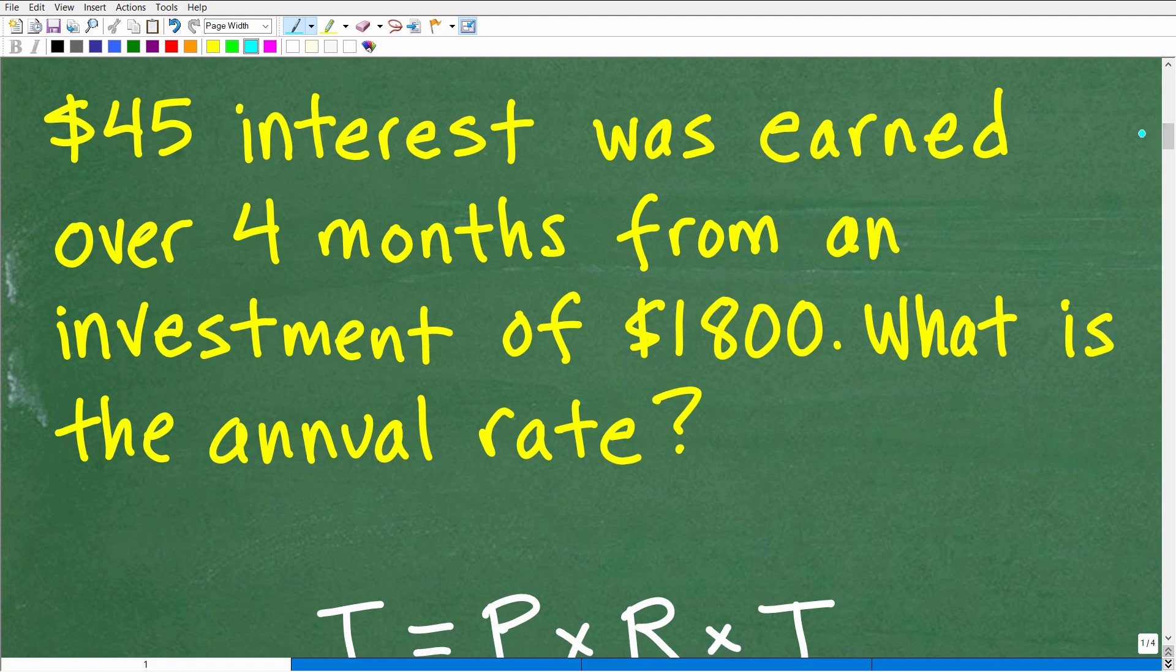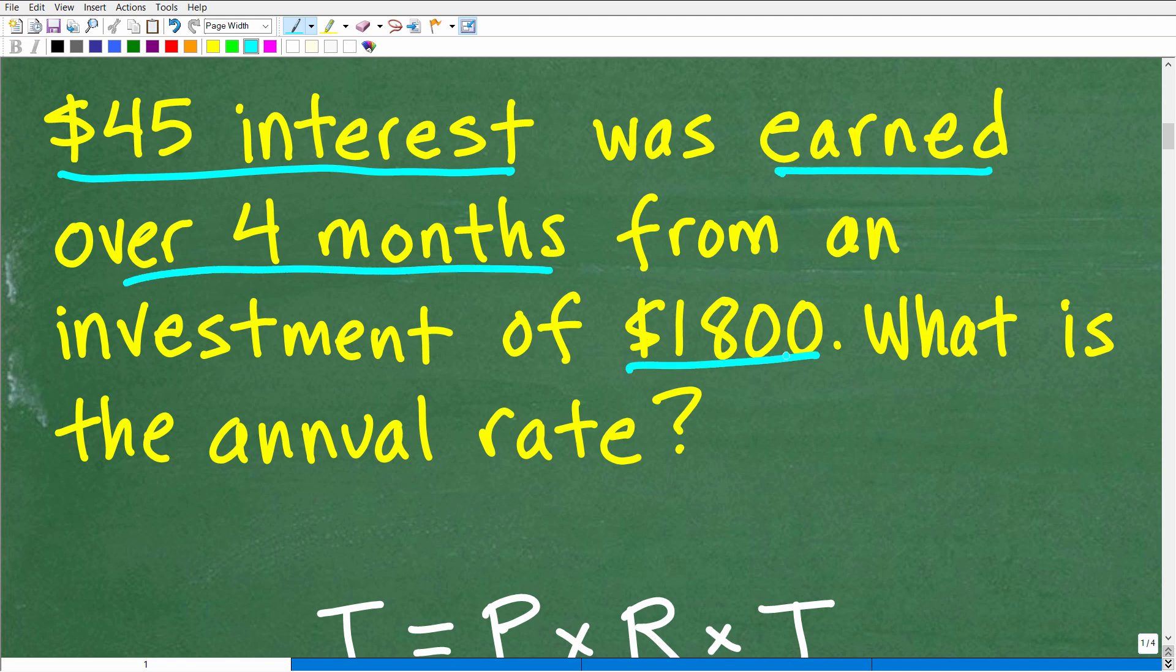So I already kind of described what's going on, right? So here we've made $45 of interest. That's what was earned over four months. Now we put in $1,800 into this investment. But if we made $45 of interest over four months, we need to be thinking in terms of one year because we're looking for an annual rate.